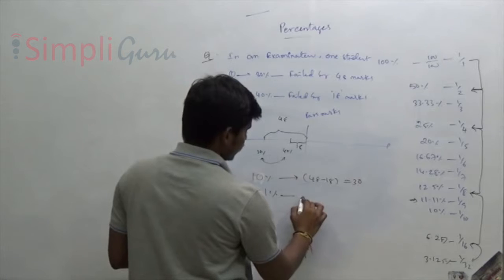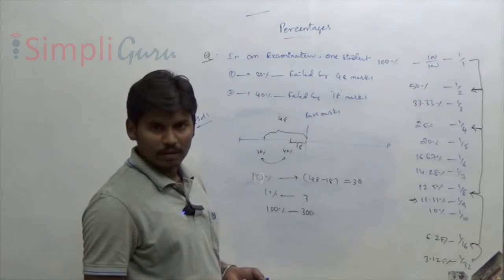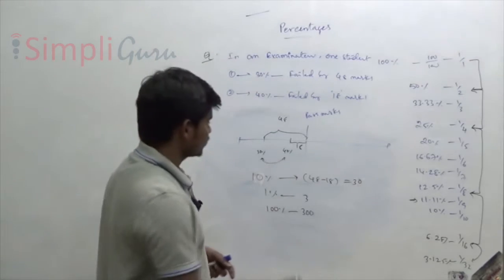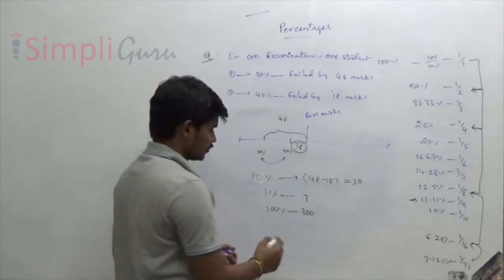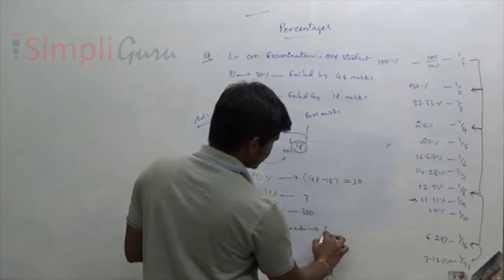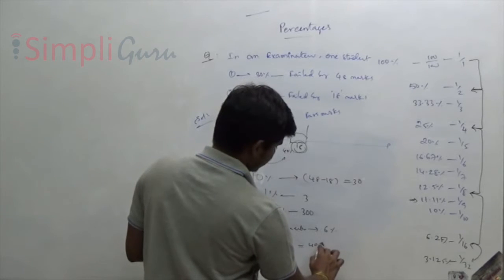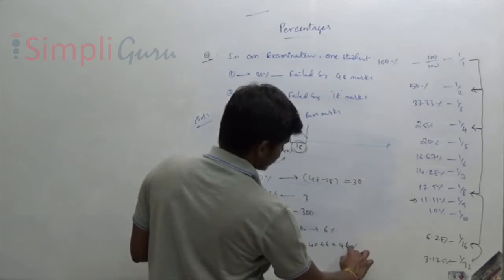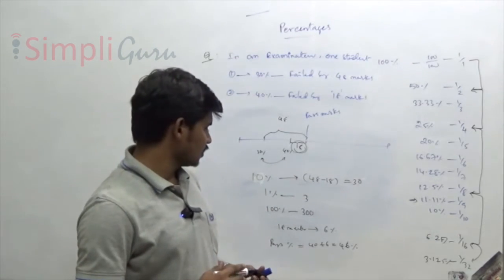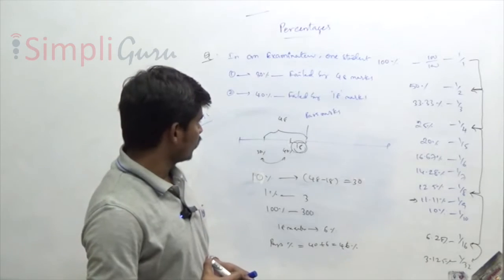Since 10% = 30 marks, 1% = 3 marks, and 100% = 300 total marks. For pass percentage: 18 marks equals 18/3 = 6%, so pass percentage = 40% + 6% = 46%. To find pass marks: 46 × 3 = 138 marks.